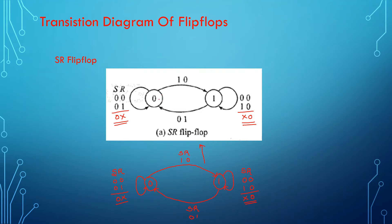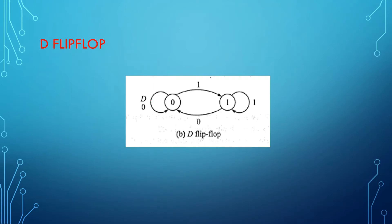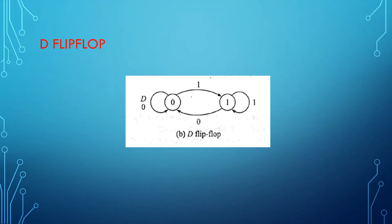Moving on to the D flip-flop, which is a transparent flip-flop. If 0 is the present state and the same state has to be retained, give input D as 0. If 1 is the present state and the same state has to be retained, give input as 1. If the present state is 0 and you want the next state to become 1, give D as 1. If the present state is 1 and you want to change the state to 0, give input D as 0. This closely matches the characteristic equation and truth table.